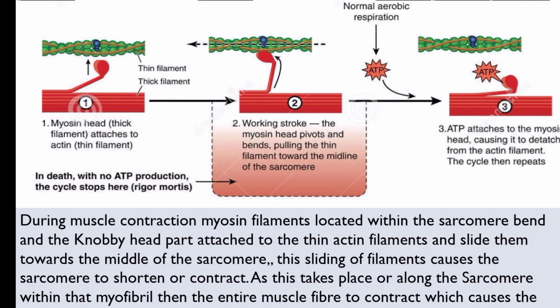Looking at the diagram, the red color is the thin actin filament. The thick myosin filament head portion bends and attaches to the thin actin filament.